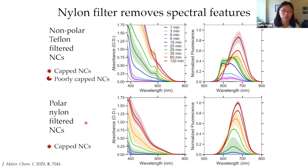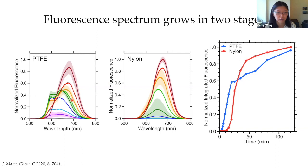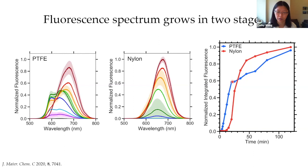If we integrate under the fluorescence curves and plot integrated intensity as a function of reaction time, we see two distinct growth curves. Within the first 20 minutes, the Teflon-filtered sample grows in intensity rapidly and fairly linearly, then suddenly continues to grow but at a much lower rate. Meanwhile, nylon-filtered samples initially don't fluoresce at all — we think these are poorly capped nanocrystals that can't survive filtration. At some point they have enough organic ligand to protect them, and then fluorescence intensity grows up.